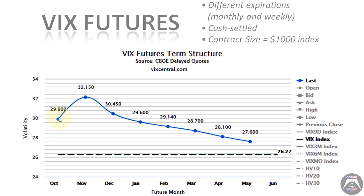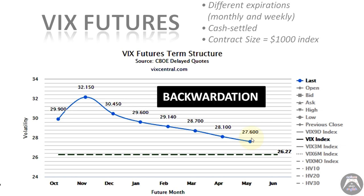The active month is currently October at 29.90, then November at 32.15, December at 30.45, January at 29.60. Even though VIX is at 26.27, the term structure tells us it's expected to go higher and then start going down. This particular arrangement — where the front month is high and subsequent months go lower and lower — is called backwardation.